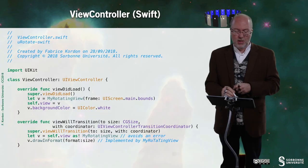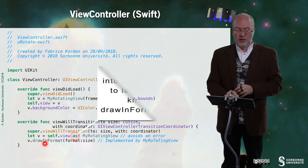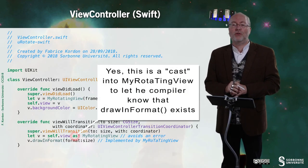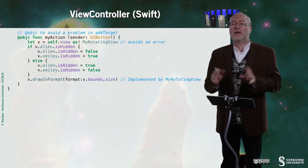Let's have a look at the ViewController in Swift. Basically, it's exactly the same actions, just written in Swift. The viewDidLoad does exactly the same thing. Then you have viewWillTransitionToSize, and myAction — once again implemented in Swift — but doing exactly the same thing as the Objective-C version.